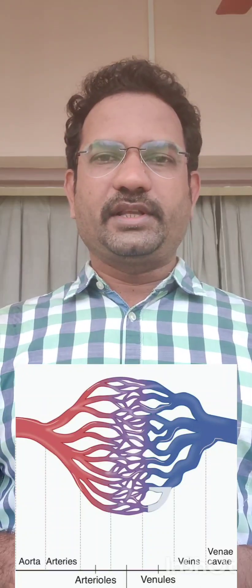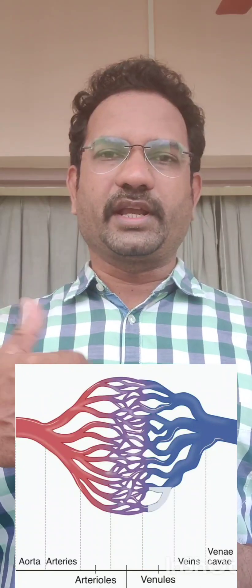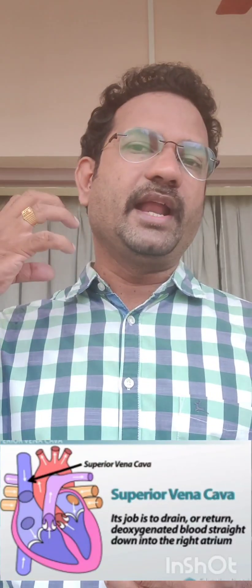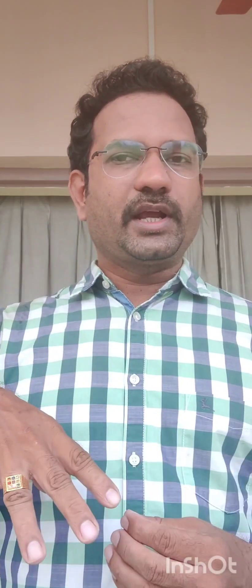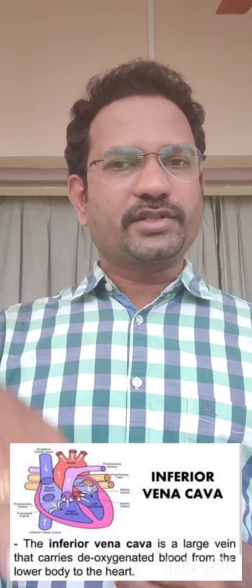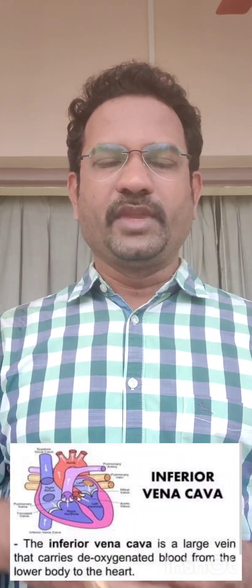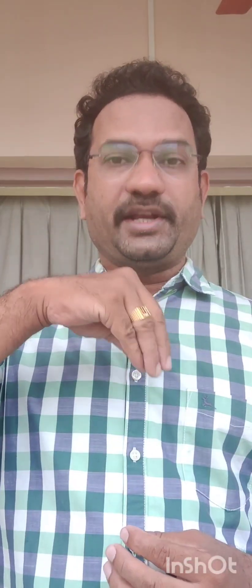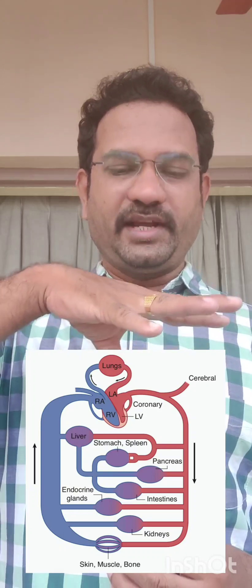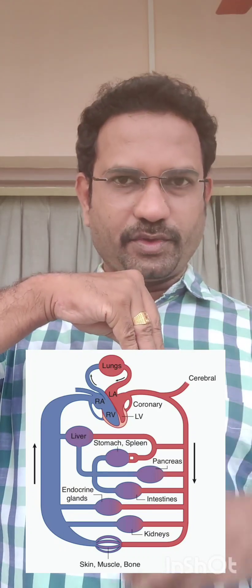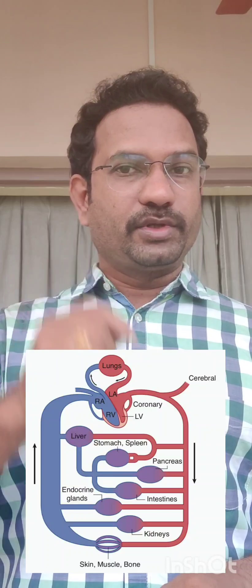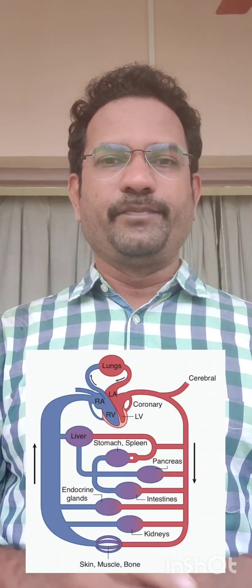There are two vena cavae: inferior vena cava and superior vena cava. Superior vena cava drains deoxygenated blood from the head and neck regions. Inferior vena cava drains deoxygenated blood from the lower parts of the body. All this blood is drained to the right atria. When right atria contracts, the blood drains down to the right ventricle. Both right atria and right ventricle contain deoxygenated blood.